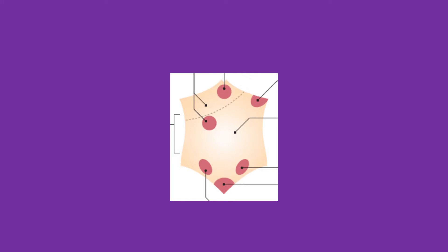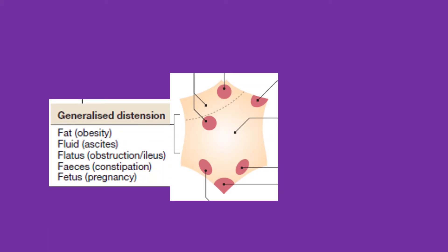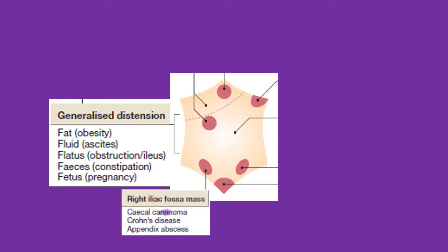Let's see abdominal mass differential diagnosis based on anatomic location. First, generalized abdominal distension - the differentials use the mnemonic Five F's: Fat (obesity), Fluid (ascites or fluid in the peritoneal cavity), Flatus (due to obstruction or ileus), Feces (due to constipation), and Fetus (pregnancy, where the mass may be the fetus).